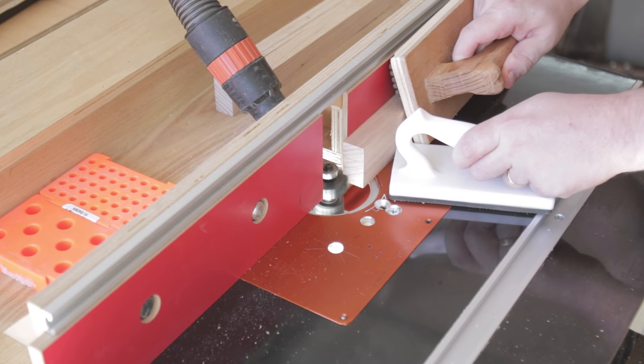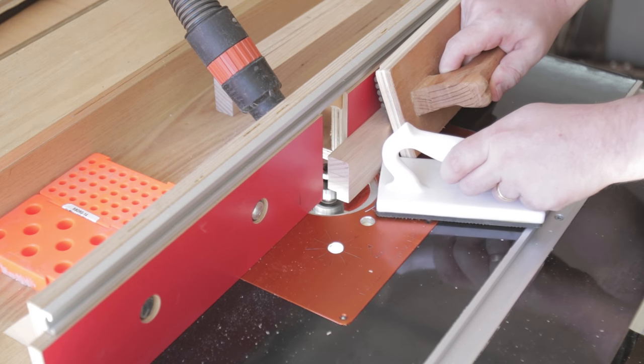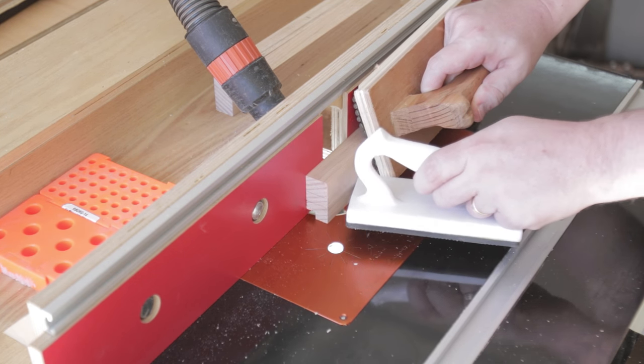The rebate is for the top of the outfeed table which will be made from form ply just like my table saw and outfeed table.